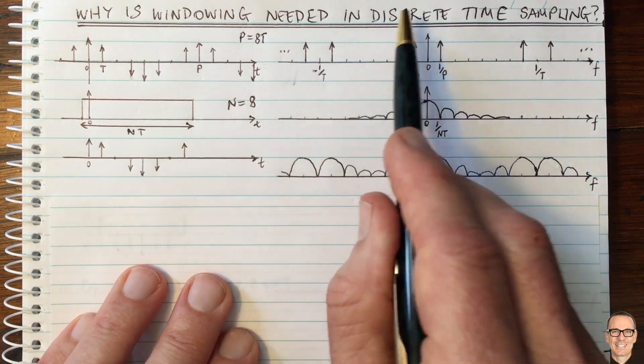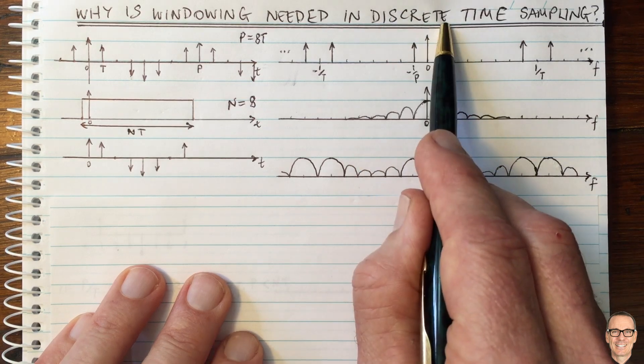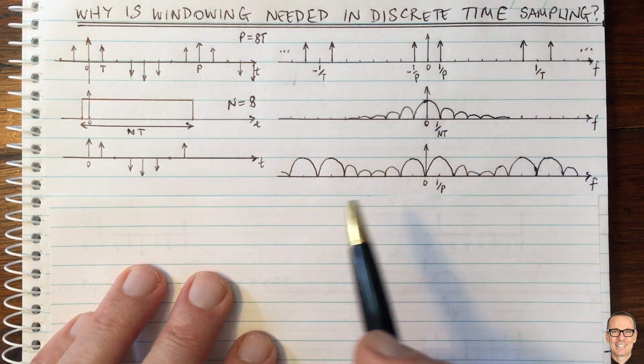This was all continuous time. Now let's think about discrete time. What happens in discrete time?